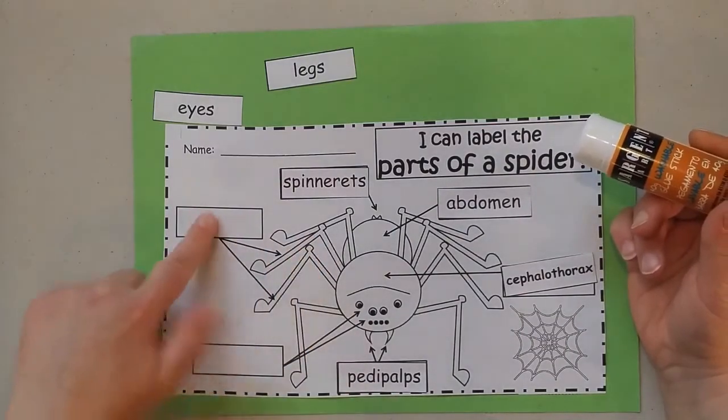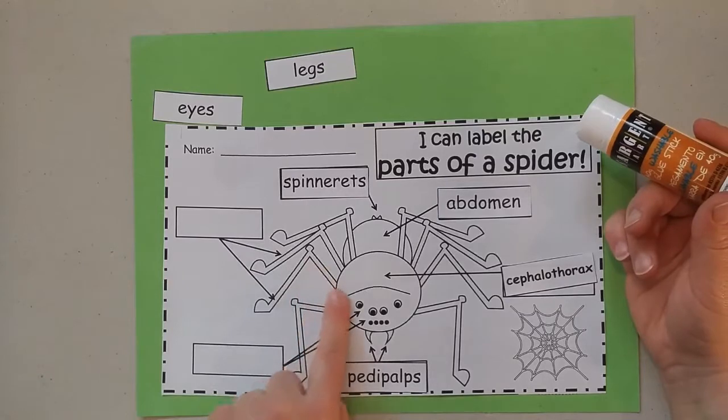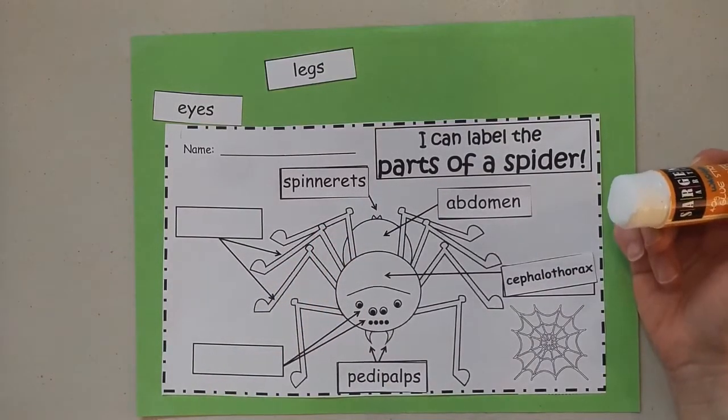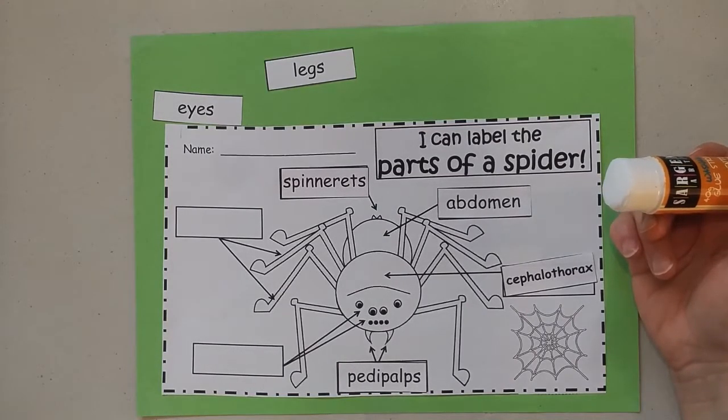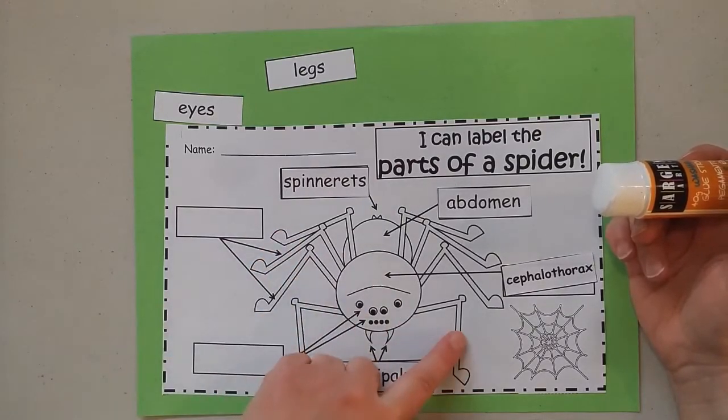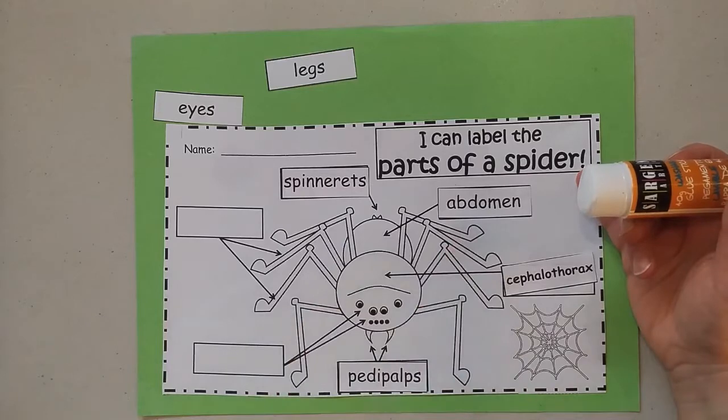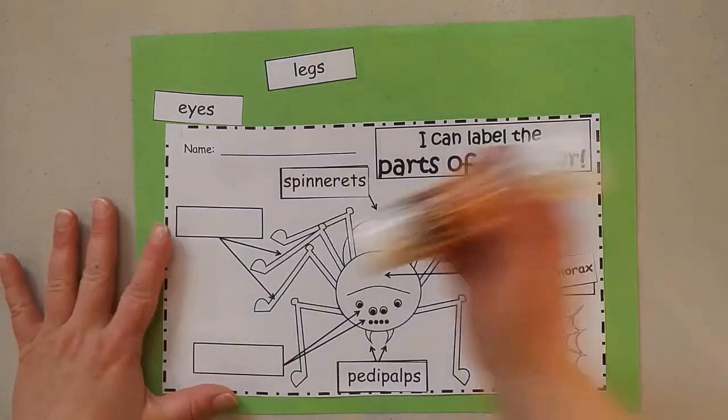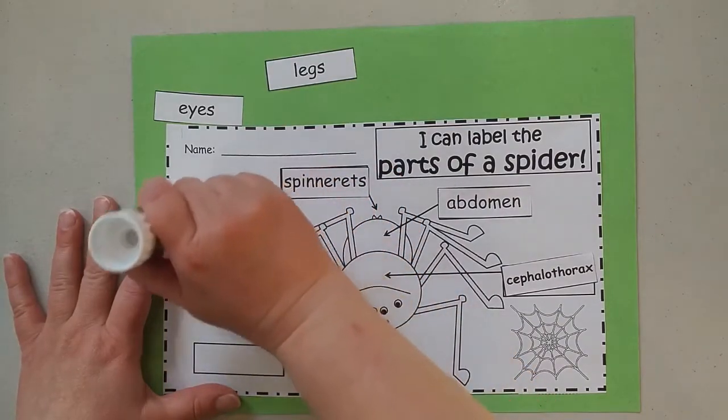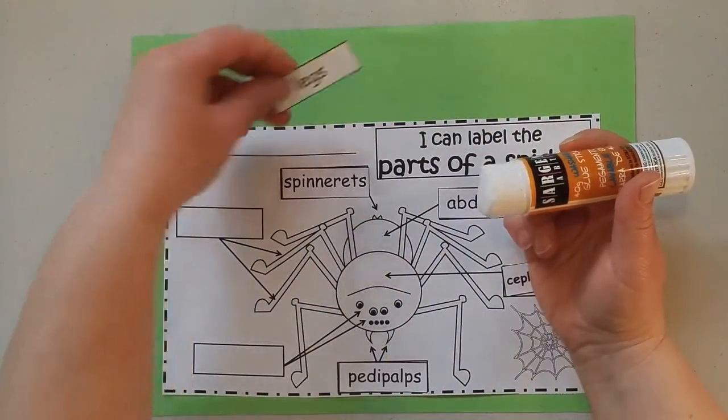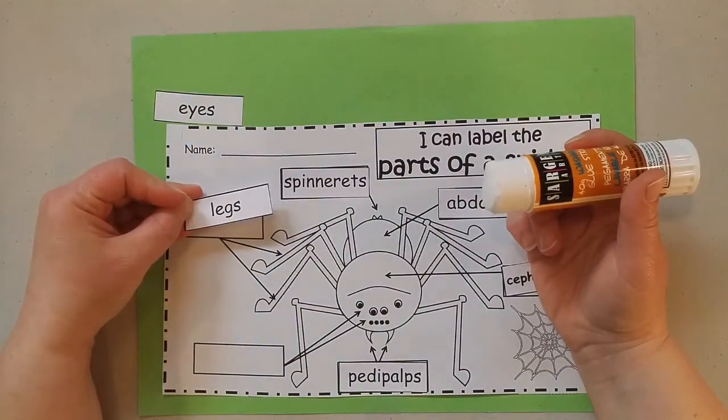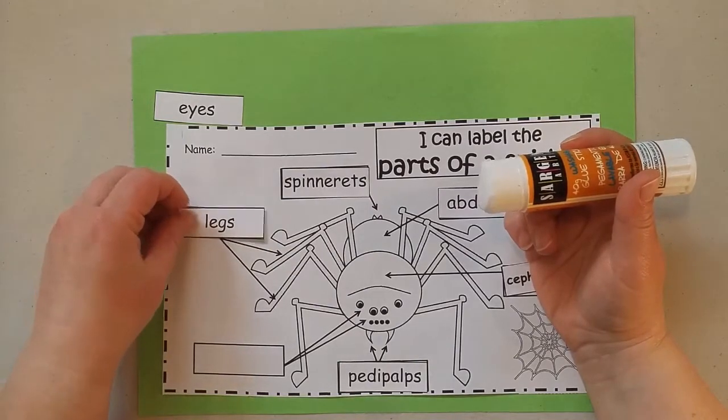Now what is this box pointing to? These arrows? What are these right here? Those are the legs. Remember a spider has how many legs? Eight. Let's count them. One, two, three, four, five, six, seven, eight. Eight legs. I am going to put my glue down. I'm going to take my legs label. It starts with an L. A lowercase L. And then I stick it in that spot. Find that piece.